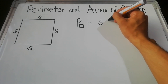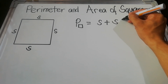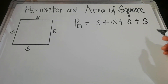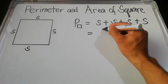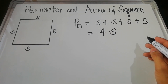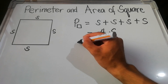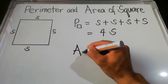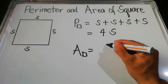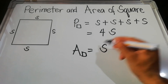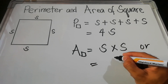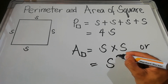The perimeter of the square is equal to s + s + s + s, or simply 4 times s, which is 4s. For the area, the area of the square is equal to the product of two sides: side s times s, or s squared.